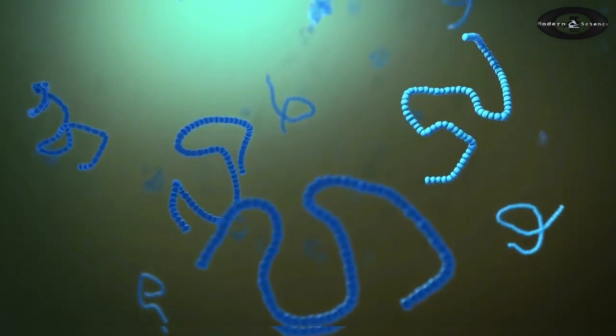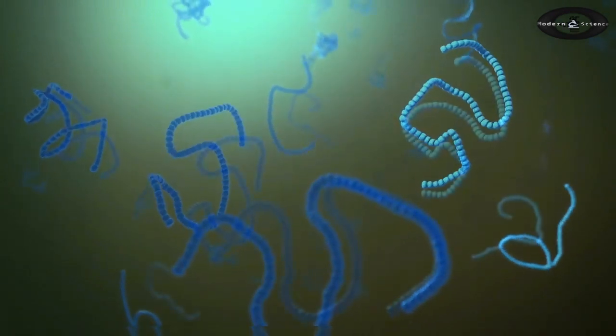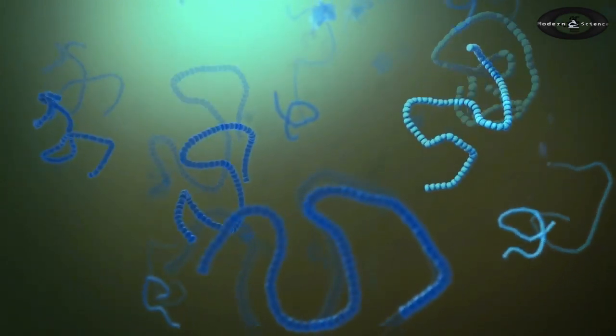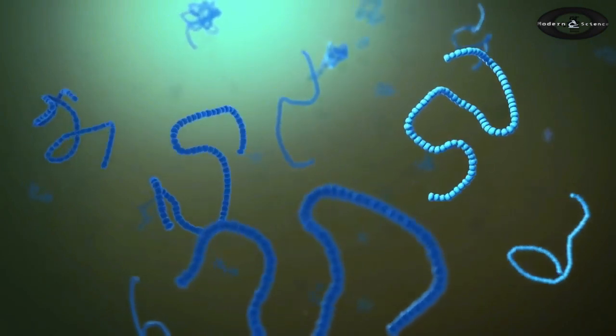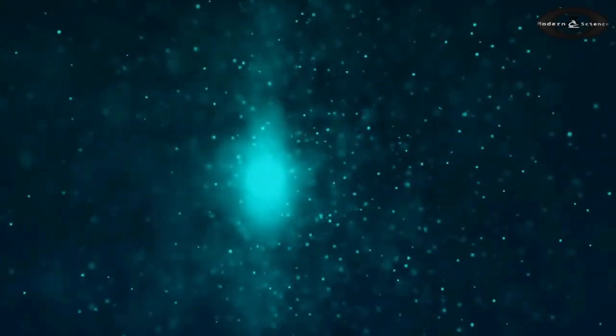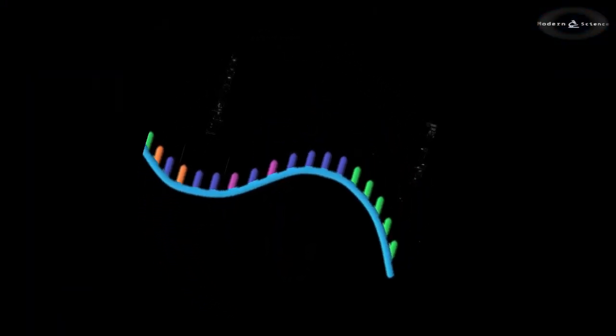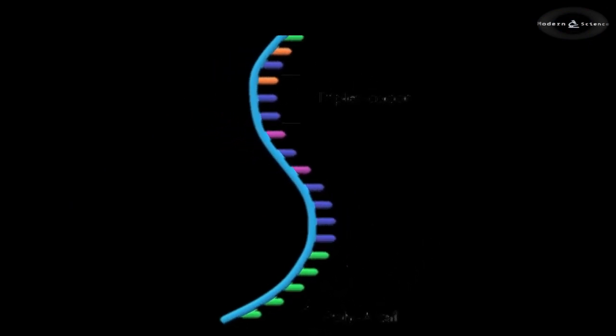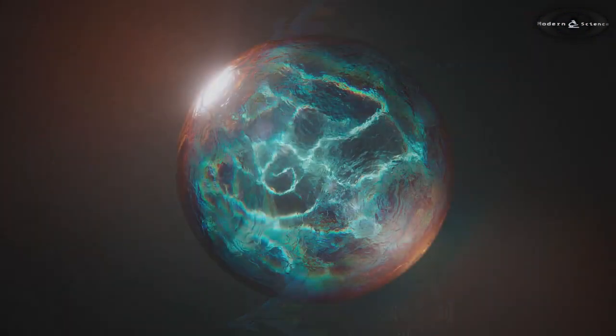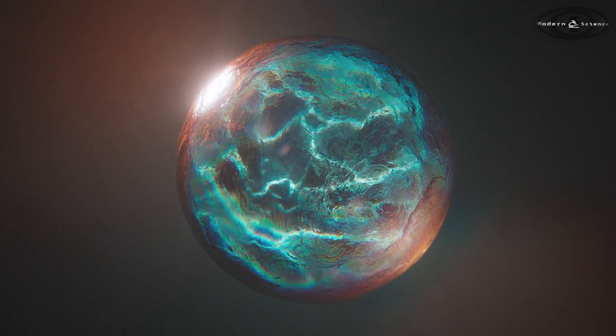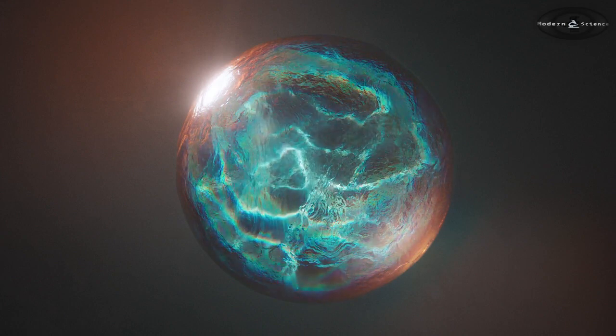It told the first living substance which is our ancestor is RNA that could copy itself without help from other molecules. But how that first RNA is created, just like how the primordial atom created before Big Bang?